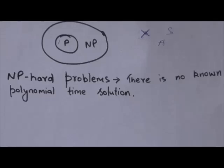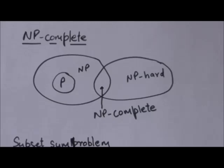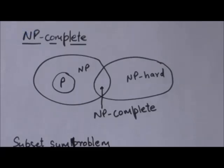NP hard problems are those problems for which there is no known polynomial time solution — they are not solvable in polynomial time. NP complete problems are those problems which are both NP hard and NP. They are not solvable in polynomial time, but if any solution for them is given to us, it can be verified in polynomial time whether the given solution is correct or not.